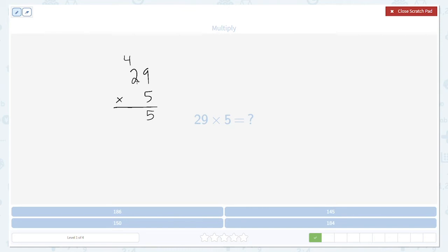5 times 2 is 10. Plus 4 is 14. 145. Remember, that number that we carry gets added after the multiplication. It's 2 times 5 plus 4. The plus 4 has to come at the end. So we have 145, and that's going to be our answer.